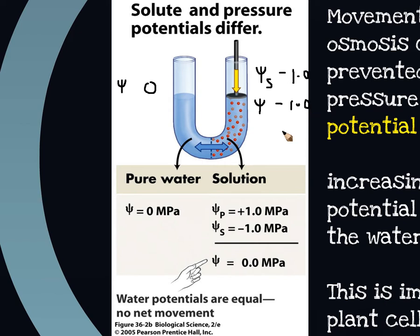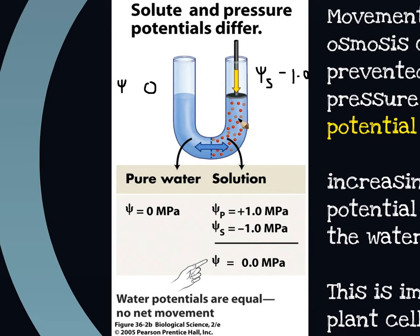Is there any way to actually increase water potential? Adding solutes means solute potential is always a negative value, so it reduces the overall water potential. But what we can do is apply a physical pressure. Water would normally move from pure water — the highest water potential — to an area with solutes and lower water potential. But if we use a plunger and apply a physical force, pushing down on the water on this side, we can push water through the membrane in the middle.